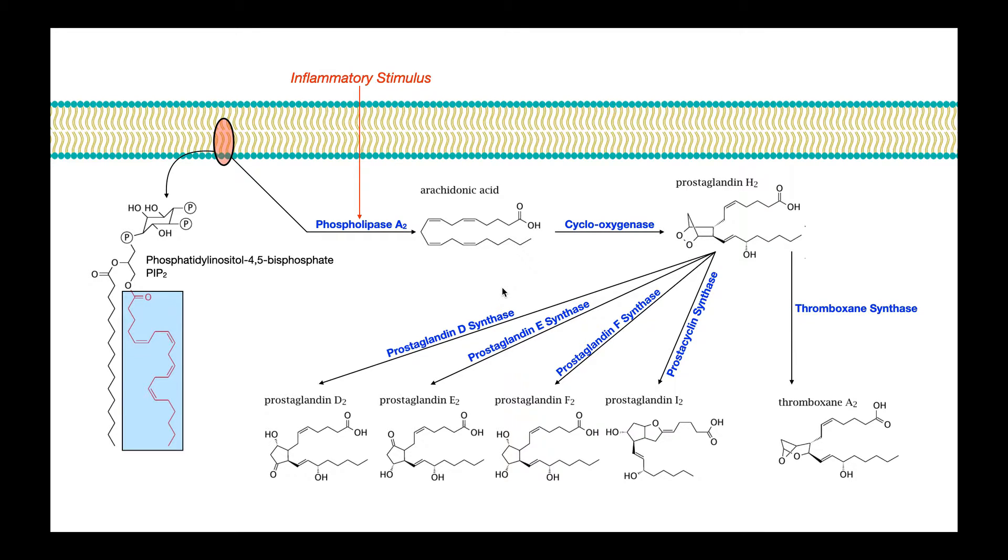In this video we're going to be talking about the biosynthetic pathway for the eicosanoids. So first of all, what is an eicosanoid? Well we need to go back to our organic chemistry and remember icosane. Icosane is a hydrocarbon that has 20 carbon atoms.